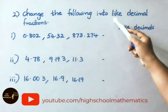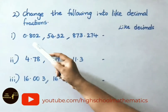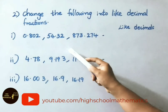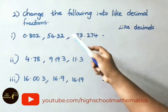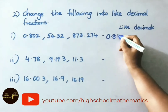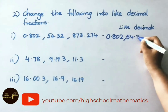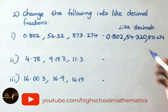See the second question: change the following into like decimal fractions. Like decimals means decimals having the same number of decimal places. See the first sum: 0.80, 2.54, 32.873, and 2.74. The first and last decimal numbers have 3 decimal places, but the second has only 2 decimal places. We place a 0 at the end of the second fraction to convert: 0.800, 2.540, 32.873, 2.740. All three are now like decimals with 3 decimal places.